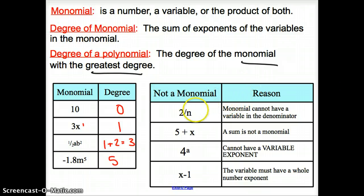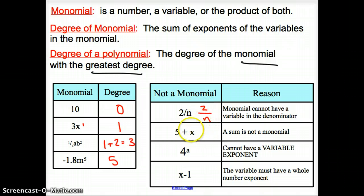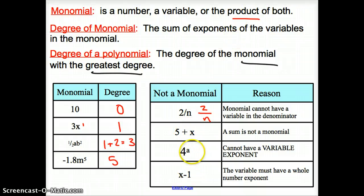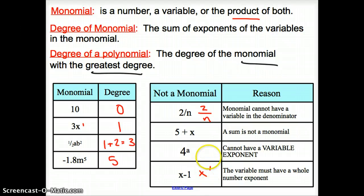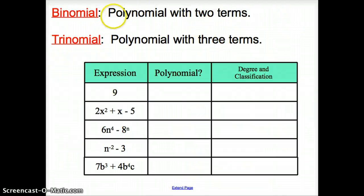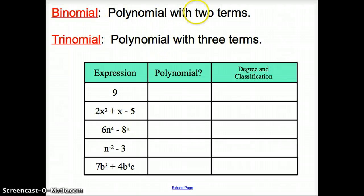Reasons why something would NOT be a monomial: you cannot divide by a variable. You cannot add — it's only a product. We cannot have variables as exponents. And you cannot have a negative exponent. Also, a binomial is a polynomial with two terms. A trinomial is a polynomial with three terms — just like the tricycle you used to ride when you were younger or the bicycle you still ride now.